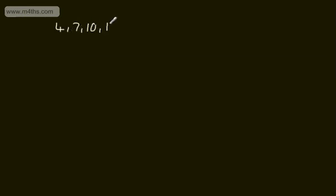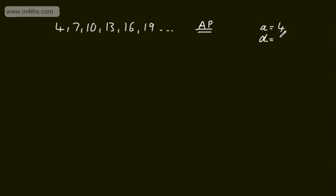Arithmetic sequences are often called arithmetic progressions, or APs for short. An arithmetic sequence will have a common difference, so our sequence will either go up or down by a fixed amount. An example of an arithmetic sequence could be 4, 7, 10, 13, 16, 19, and so on. This is an AP going up by 3 each time. We can say the first term A is 4, and the common difference is positive 3.